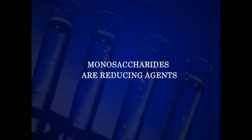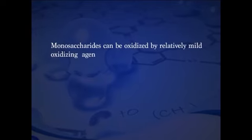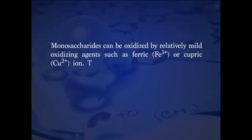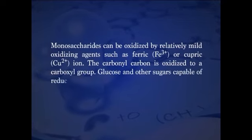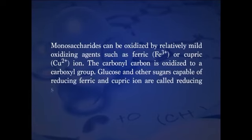Monosaccharides are reducing agents. Monosaccharides can be oxidized by relatively mild oxidizing agents such as ferric or cupric ions. The carbonyl carbon is oxidized to a carboxyl group. Glucose and other sugars capable of reducing ferric and cupric ions are called reducing sugars. By measuring the amount of oxidizing agent reduced by a solution of a sugar, it is also possible to estimate the concentration of that sugar.